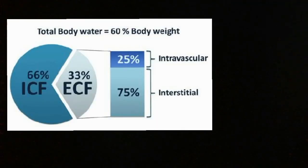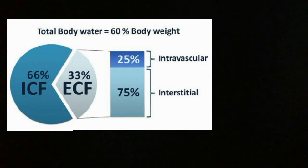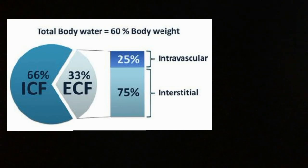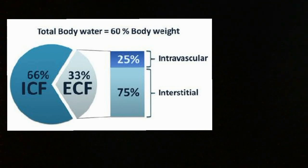The fluid in our body, that is water, consists of about 60% of the total body weight. That would be 24 liters in a 40 kg individual. This water is distributed into an intracellular and an extracellular compartment. The extracellular fluid is present in intravascular space and interstitial space.